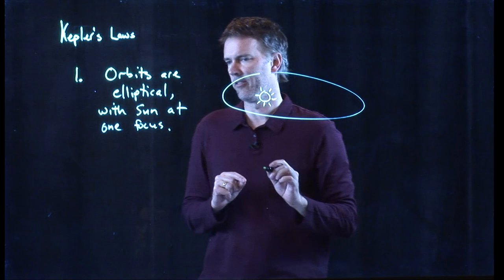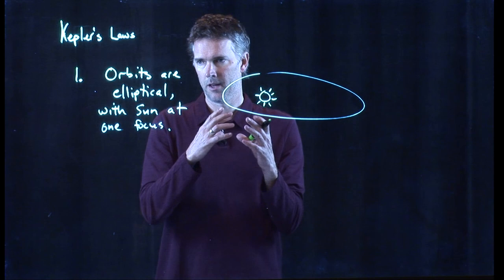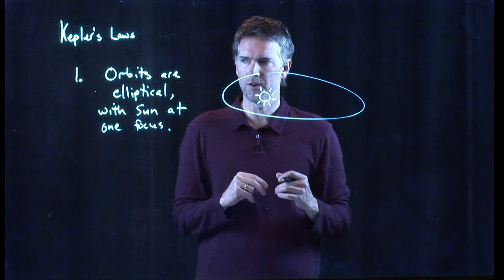This is a big step because earlier Tycho Brahe and other people thought that they were circular orbits. And the reason they thought they were circular orbits is because when you look at the orbit of the Earth around the Sun, it is nearly circular. But other planets have much more eccentric orbits.